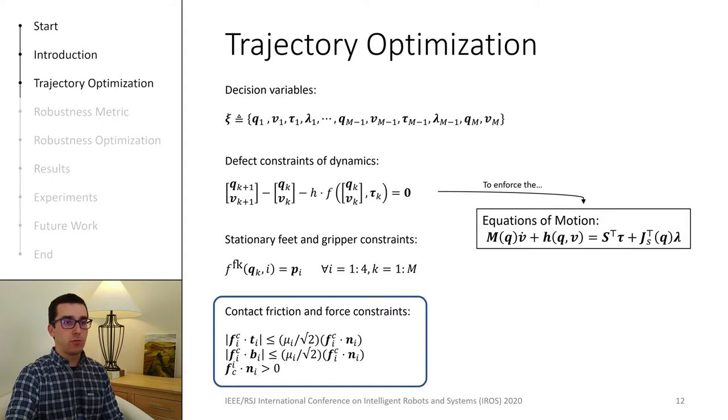This formulation is the basis of our optimization framework, and we can use it to plan feasible motions. But we are not only interested in planning feasible solutions. What we really want is to optimize the robustness of the trajectories, and for that, we need the robustness metric to define an objective function.